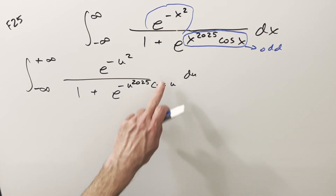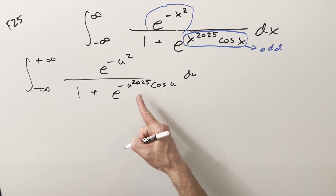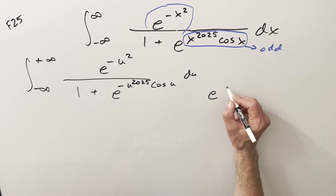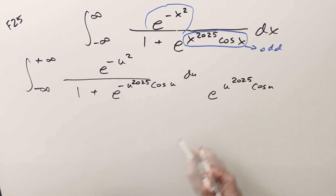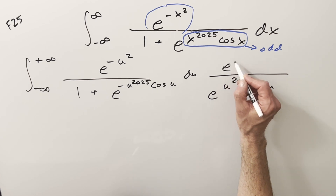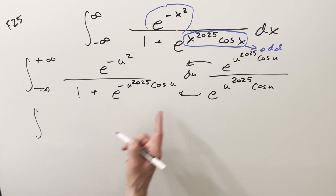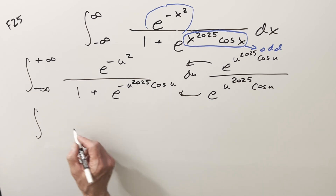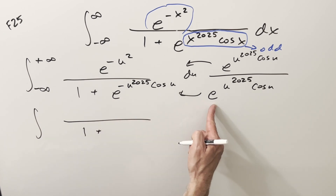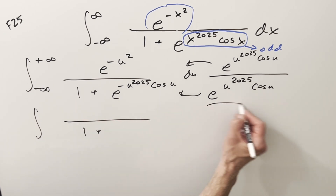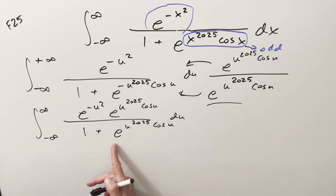Next I want to clean up the denominator so we can get it to look more like what we had originally. I can multiply in e to the u to the 2025 in the denominator — and do the same in the numerator, so we're just multiplying by 1 — and then distribute in. In the denominator, this times this creates a 1 because we get a 0 in the exponent, and multiplying the other term gives back the original expression.